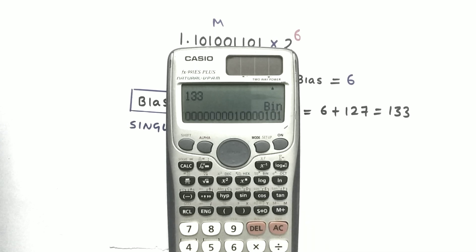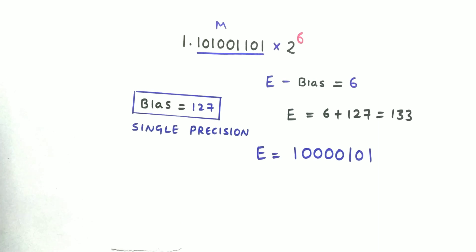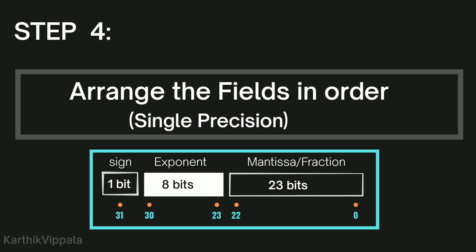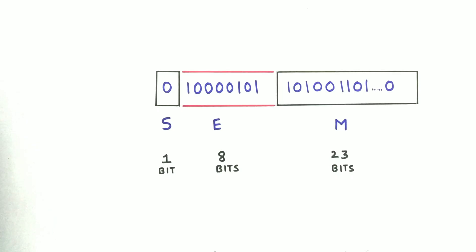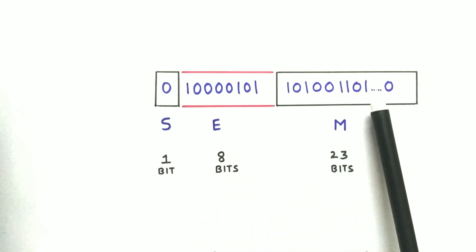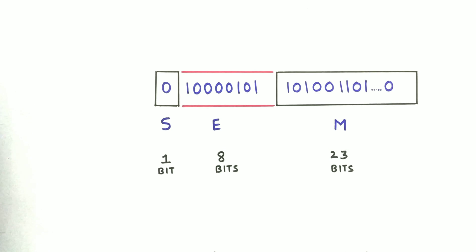So we got our sign, mantissa, and exponent. The fourth step is to arrange the fields. The sign value is 0, the exponent value is as shown, and the mantissa value is as shown. Since the mantissa is short, the remaining bits are filled with zeros.